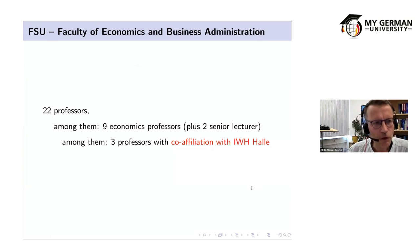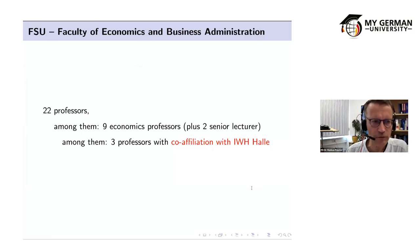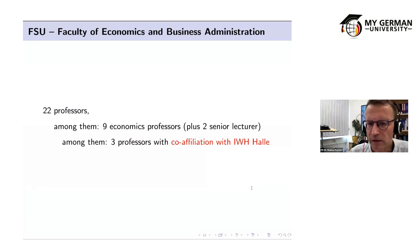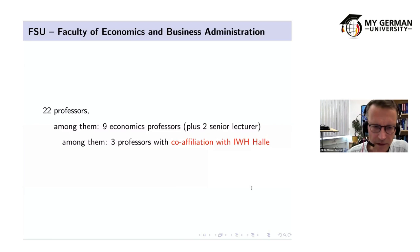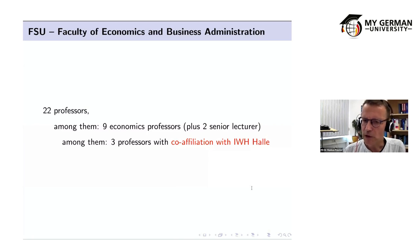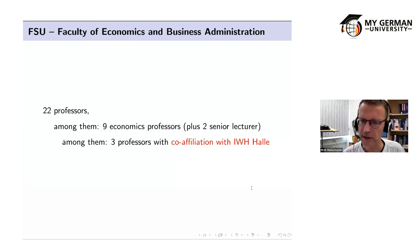Our Faculty of Economics and Business Administration has 22 professors, including nine chairs in economics plus two senior lecturers. Notably, three professors have a co-affiliation with the IWH Halle — one of the five major economic research institutes in Germany, alongside those in Berlin, Munich, Mannheim, and Kiel. This close connection to research is also interesting for students who may want to pursue doctoral studies after the master's, potentially in cooperation with Halle or other institutions.